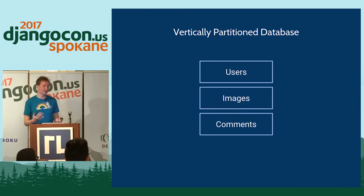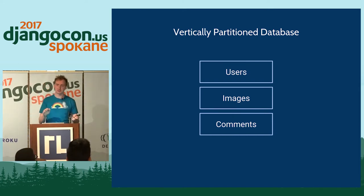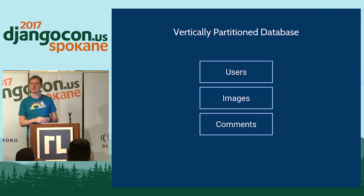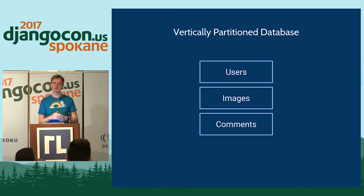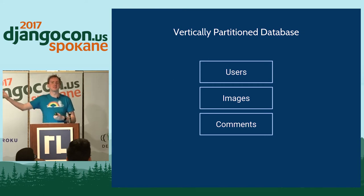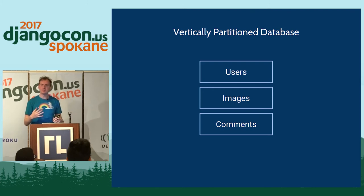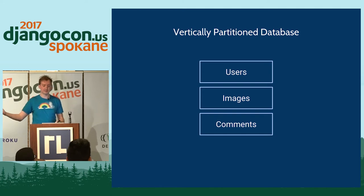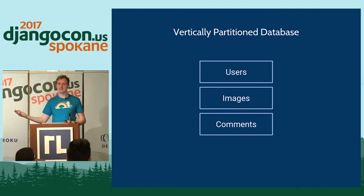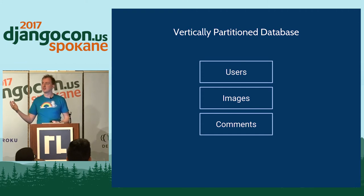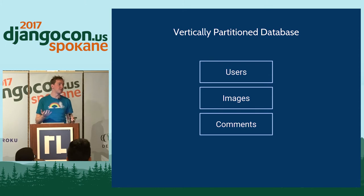The first approach is what we call vertical partitioning — a fancy name for giving each table its own database. If you have a big users table, a big images table, and a big comments table, like a cheap Instagram, you can very cheaply use one third of the space on each machine. The problem is you can't split further than per table — if you have one giant table, this falls down almost as soon as you look at it.